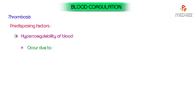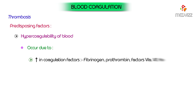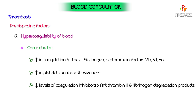Hypercoagulability of blood, which predisposes to thrombosis, may occur due to increase in coagulation factors such as fibrinogen, prothrombin, factors 6a, 7, and 10a; increase in the platelet count and their adhesiveness; and decrease in levels of coagulation inhibitors such as antithrombin 3 and fibrinogen degradation products.